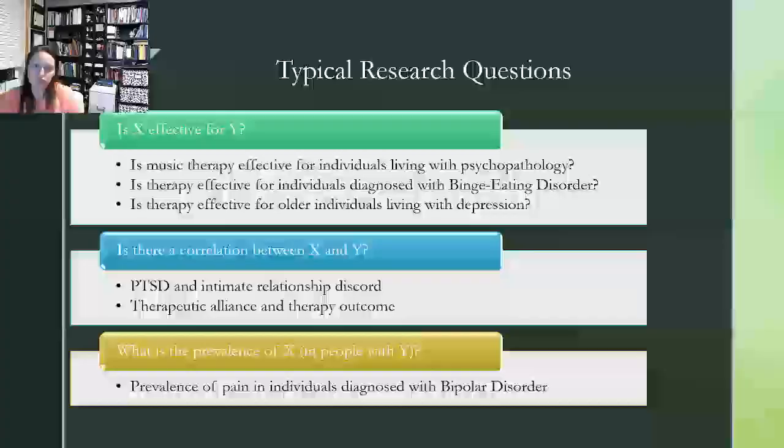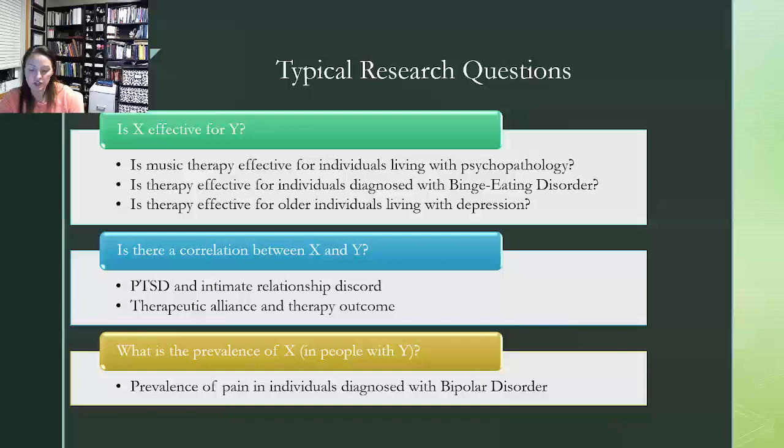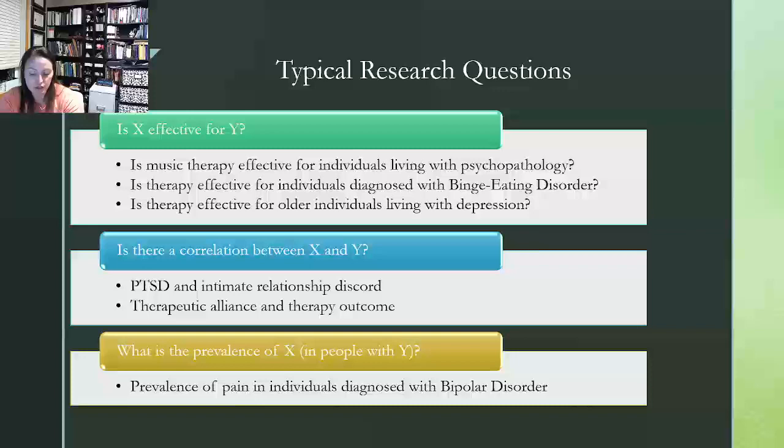So let's take a look at some possible questions of what can be examined in a meta-analysis. Now, one of the most common questions in psychological research is, is X effective for Y? So put another way, what about looking at, is music therapy effective for folks who live with psychopathology? Is therapy effective for individuals who are diagnosed with binge eating disorder? Is therapy effective for older individuals living with depression? So those are examples of that type of research question.